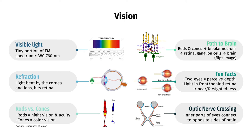The rods and cones connect to bipolar cells and retinal ganglion cells, which communicate with the brain, and the brain actually has to flip the images created by the retina, since it's upside down. Additionally, the fact that we have two eyes allows us to perceive depth, since the eyes are at slightly different locations and angles. Finally, the optic nerve, the nerve connecting the eyes to the brain, actually crosses at the optic chiasm, which means that the innermost part of our eyes connects with opposite sides of the brain.